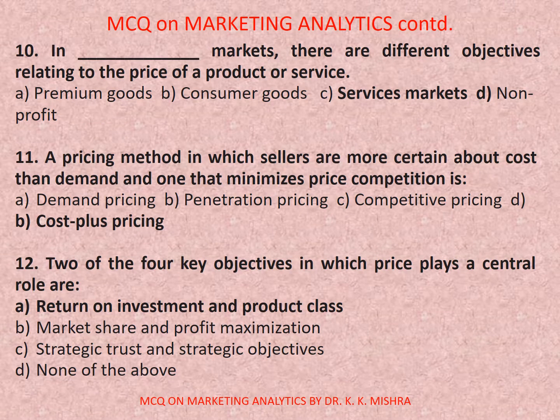Question number ten: In dash markets, there are different objectives relating to the price of a product or service. Options are: a) premium goods, b) consumer goods, c) services markets, d) non-profit. Correct option is c) services markets. Question number eleven: A pricing method in which sellers are more certain about cost than demand, and one that minimizes price competition, is? Options are: a) demand pricing, b) penetration pricing, c) competitive pricing, d) cost plus pricing. Correct option is d) cost plus pricing.